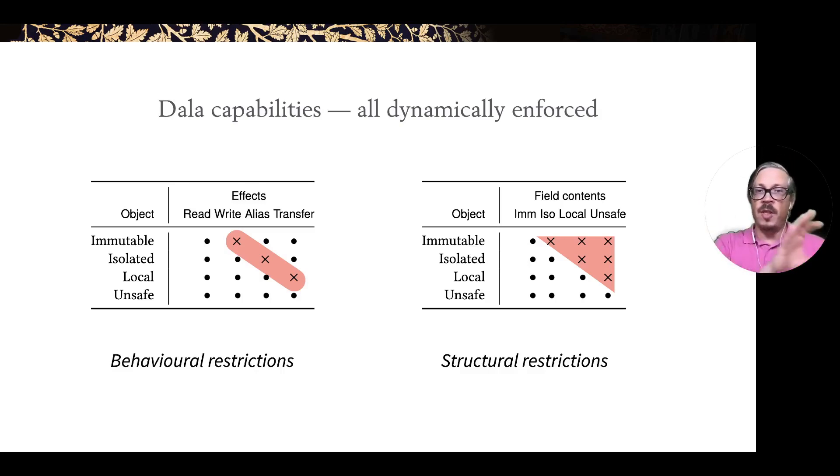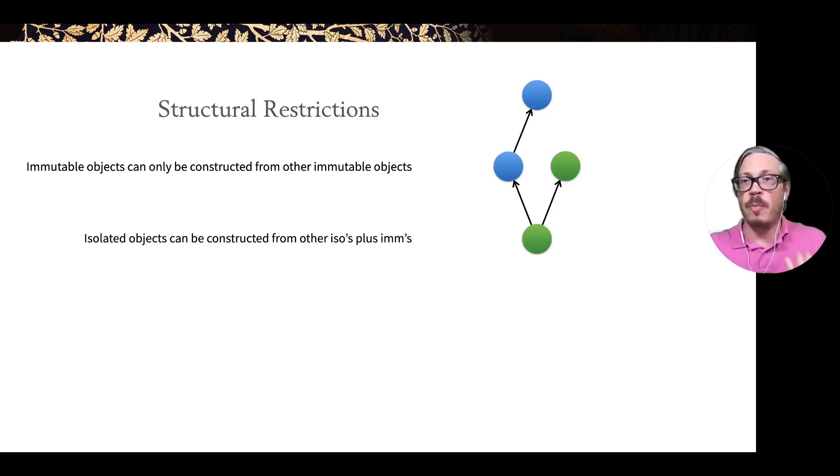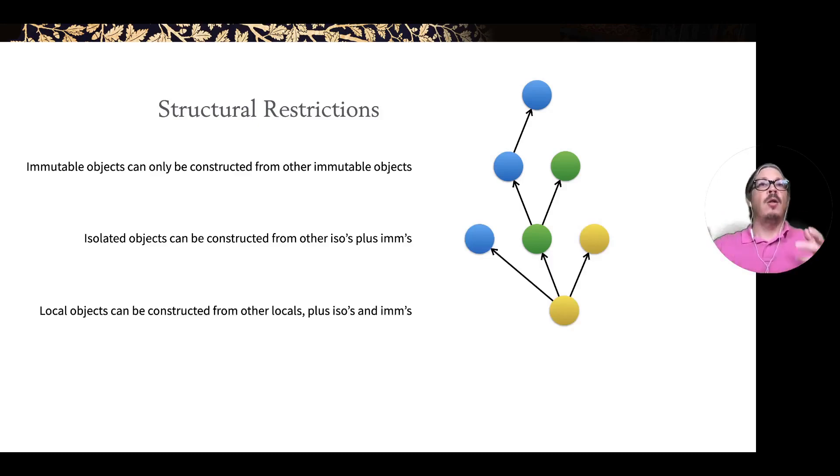On top of these behavioral restrictions, we have structural restrictions that affect what kind of data structures you can build. Immutable objects can only be constructed from other immutable objects. Isolated objects can be constructed from other isolated objects but also from immutable objects. Local objects can be constructed from locals, ISOs and IMs. And unsafe objects can be constructed from any object that's lying around.